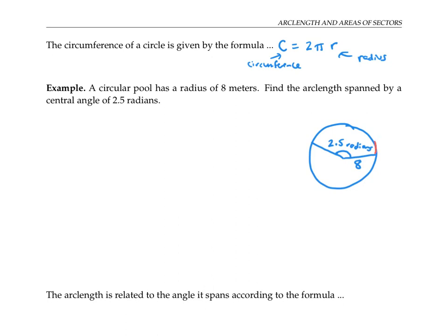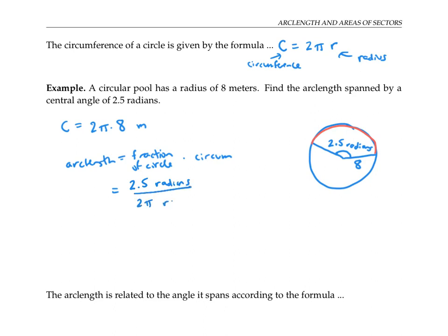I want to find the length of this arc. The total circumference is going to be two pi times eight meters, but I just want a fraction of the circumference. The arc length is given by the fraction of the circle that the angle makes times the circumference. That fraction is 2.5 radians over two pi radians, multiplied by the circumference two pi times eight meters. The two pi cancels, leaving 2.5 times eight meters, which is 20 meters.